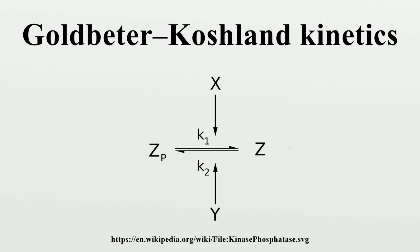Goldbeter-Koshland kinetics is an example of ultrasensitivity derivation. Since we are looking at equilibrium properties, from Michaelis-Menten kinetics we know that the rate at which Zp is dephosphorylated and the rate at which Z is phosphorylated can be written accordingly. Here the Km stands for the Michaelis-Menten constant, which describes how well the enzymes X and Y bind and catalyze the conversion, whereas the kinetic parameters K1 and K2 denote the rate constants for the catalyzed reactions.